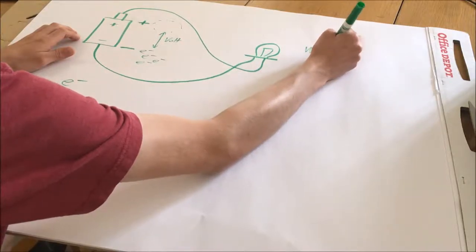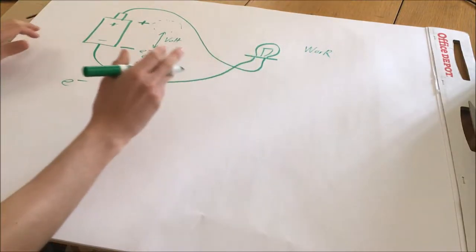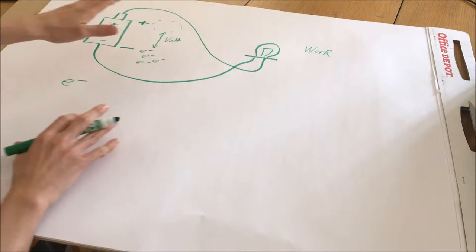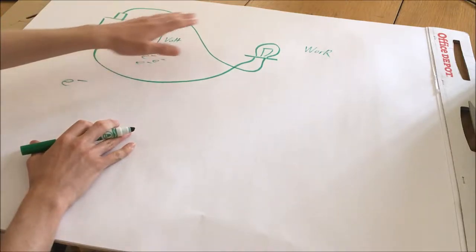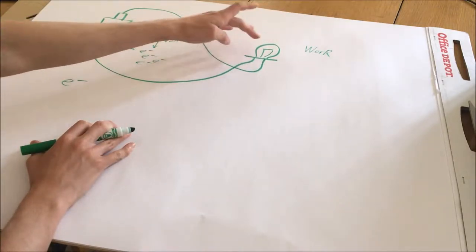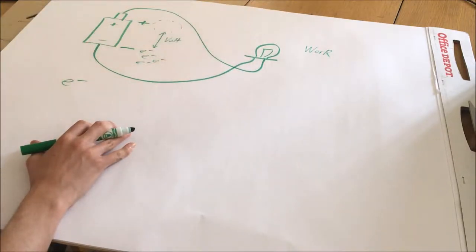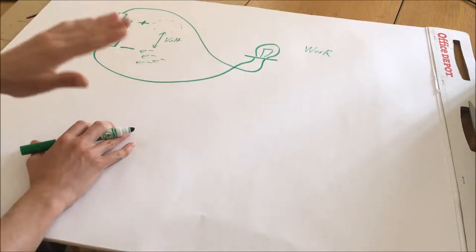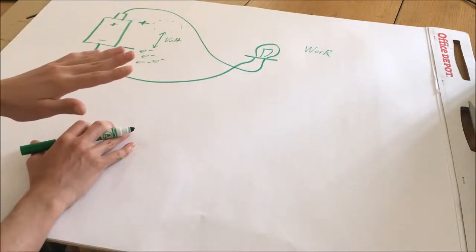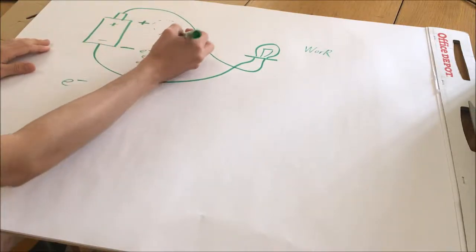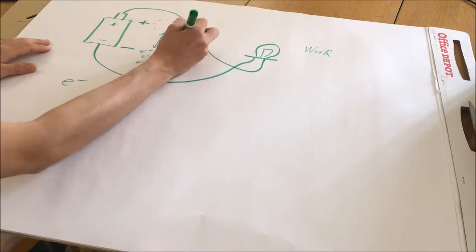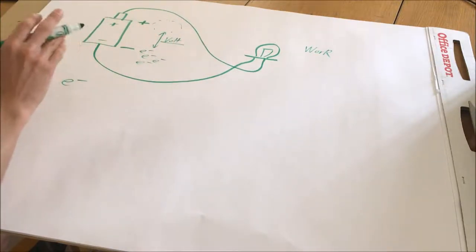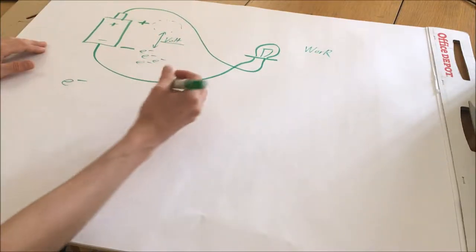Work is essentially the exchange of energy — you're turning electrical energy into thermal and light energy in the light bulb. Besides voltage, which is the potential in a circuit, we should also discuss current.